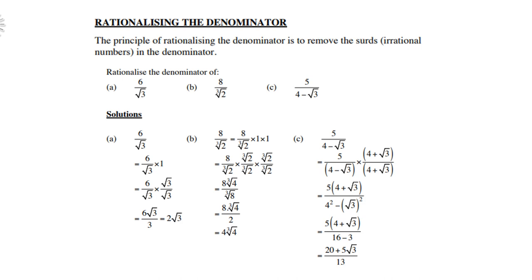So multiply the numerators: 5 times 4 plus square root 3. And at the bottom, 4 minus square root 3 times 4 plus square root 3 gives you 4 squared minus square root 3 squared, which is 16 minus 3, which is rational. So therefore remove your brackets: 5 times 4 and 5 times square root 3, and at the bottom 16 minus 3 is 13.